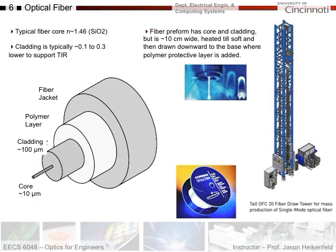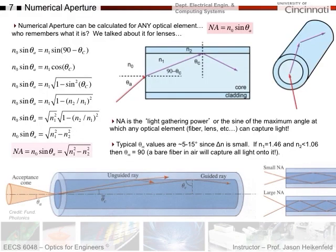Let's look at optical fibers in more detail and discuss numerical aperture. We talked about numerical aperture before—it can be calculated for any type of optical element. Who remembers what it is? We said that numerical aperture was the light gathering power of some kind of element. For a lens, it was the acceptance cone of light that could get into the lens that it could capture.